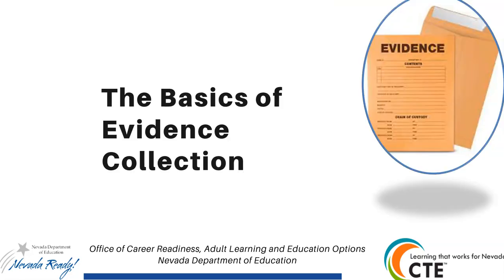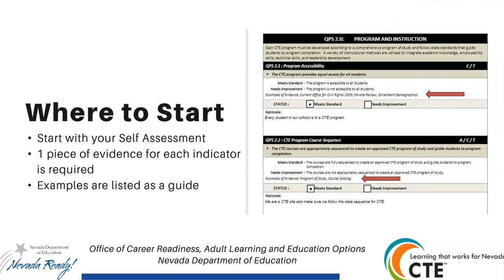We're going to start with the basics of evidence collection, and where to start is your self-assessment. When you start with your self-assessment, you'll note that there are some examples of evidence listed. One piece of evidence is required for each indicator. There are some examples you can use, but you don't have to use these. You can have something else — you're just looking for things that will answer or respond to the indicator that's listed.